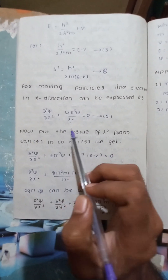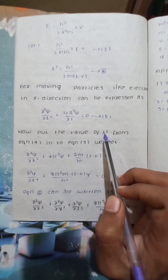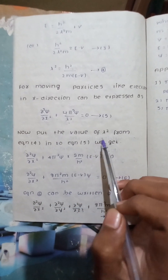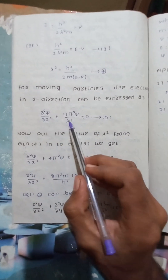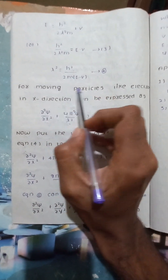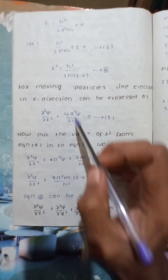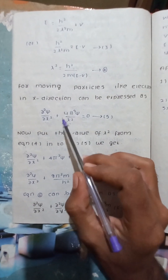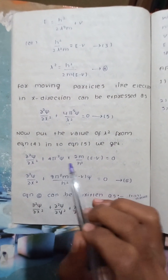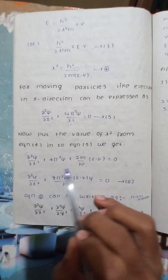Now we put the value of λ² from the previous equation into this wave equation, substituting the lambda squared value into the equation.